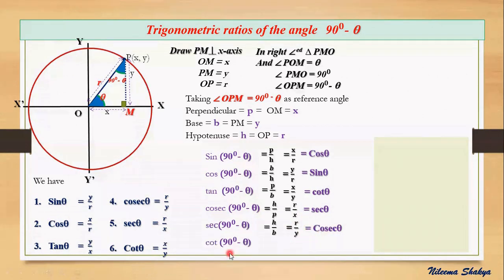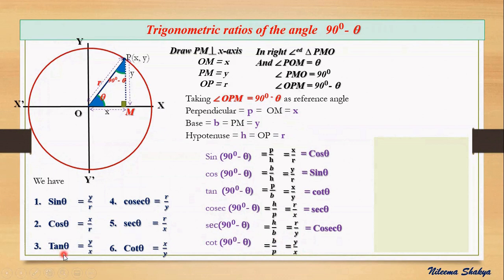Now the last ratio: cot(90° − θ), which is base by perpendicular. Substituting the values, base is y and perpendicular is x, so cot(90° − θ) = y/x. Looking at ratio number 3, tan θ = y/x, so this y/x can be replaced by tan theta. Therefore cot(90° − θ) = tan θ.